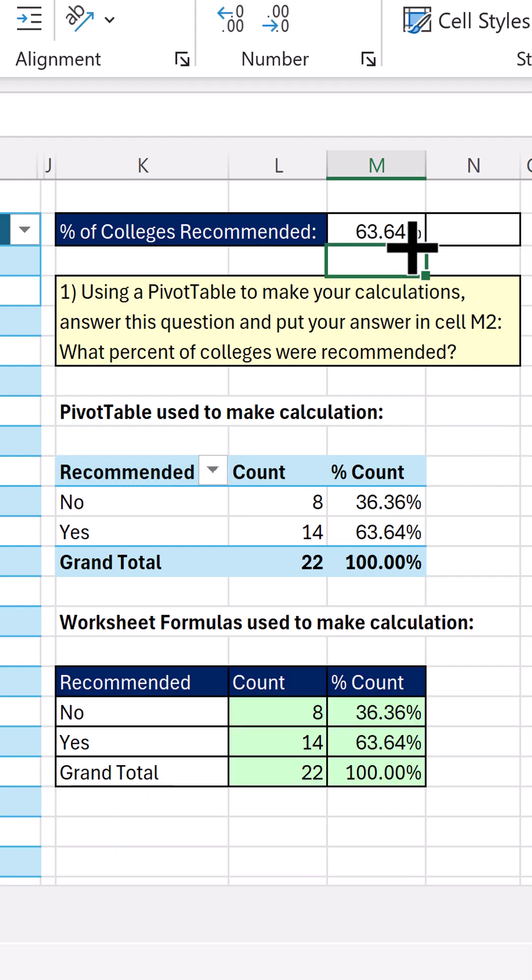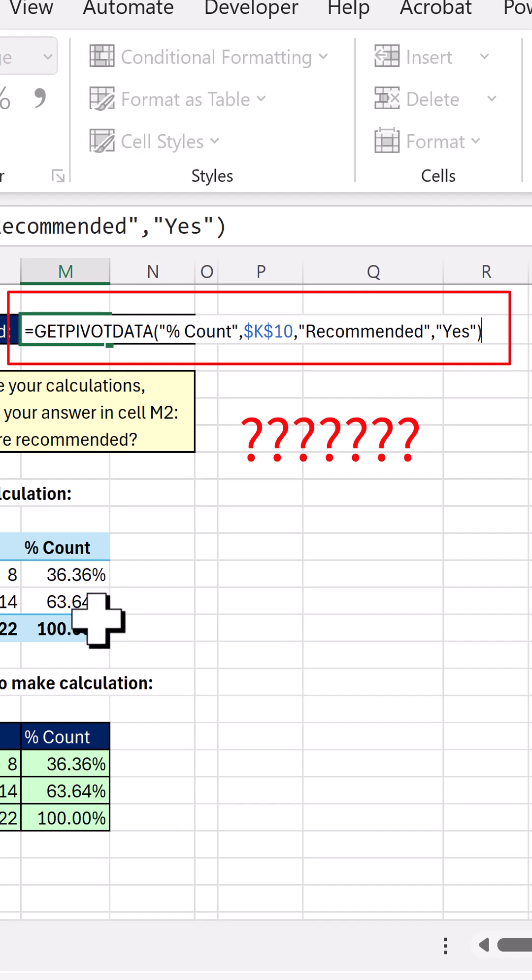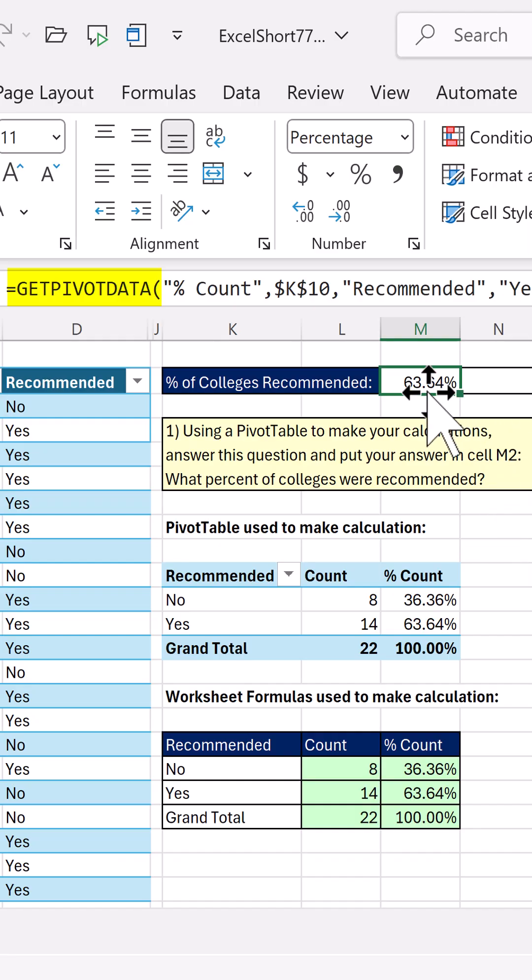Now, wait a second. F2? Yes, we used a pivot table to make our calculation. And this function has some uses. But a lot of the times, we'd rather just have the cell reference, M12. Let me show you how to turn off Get Pivot Data.